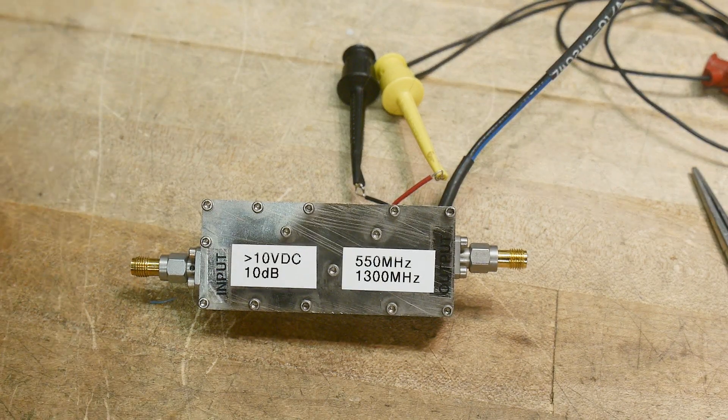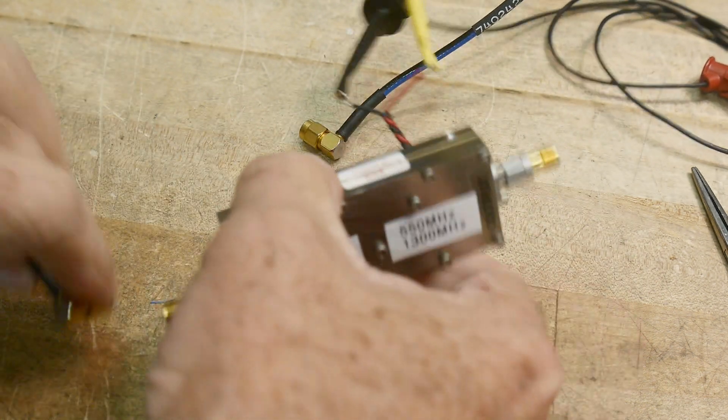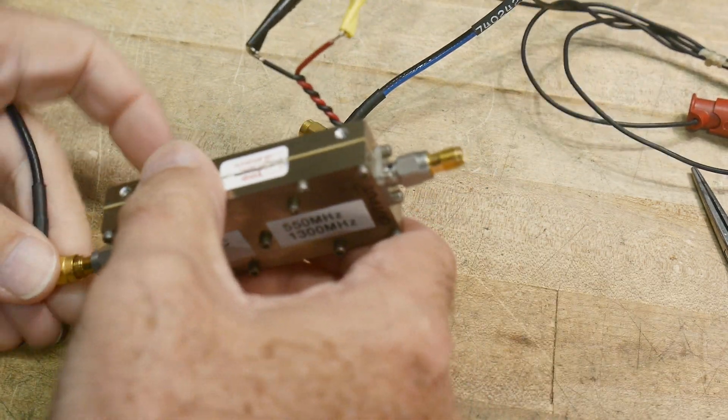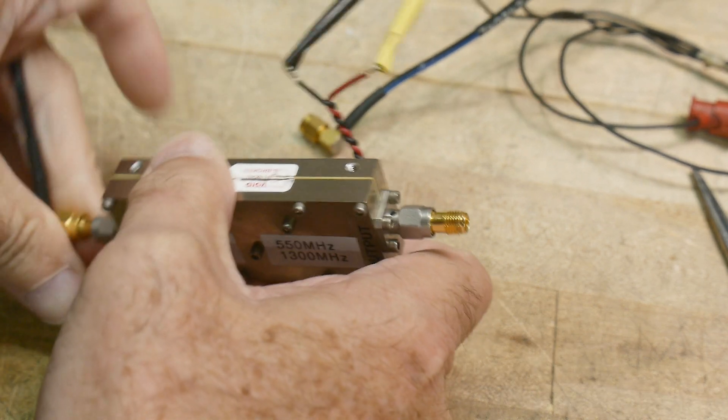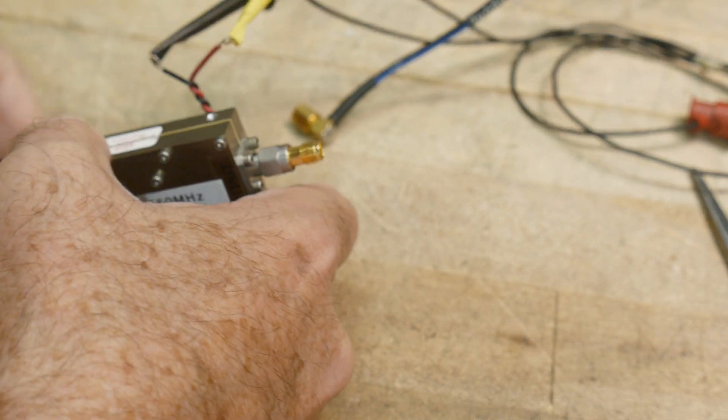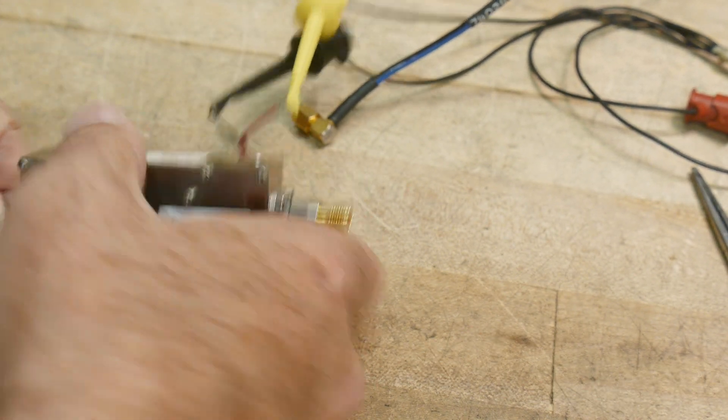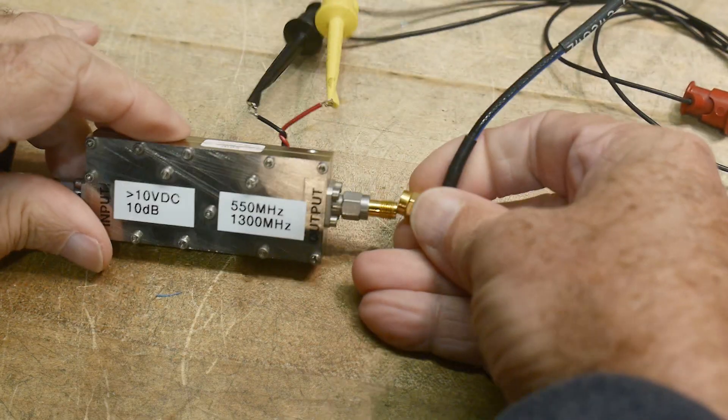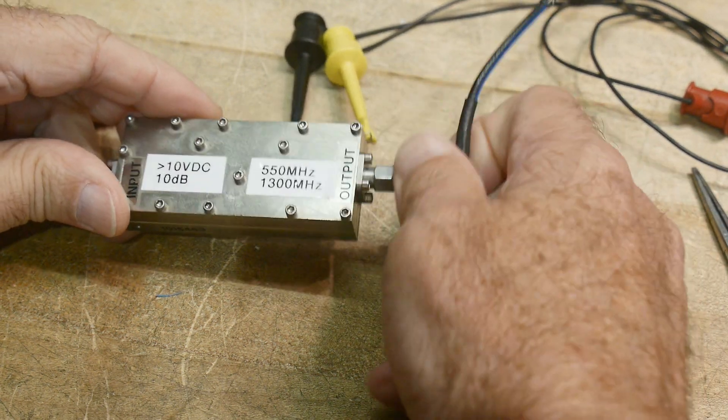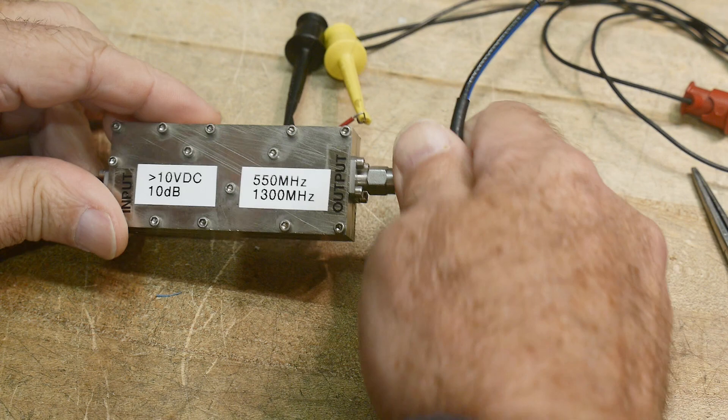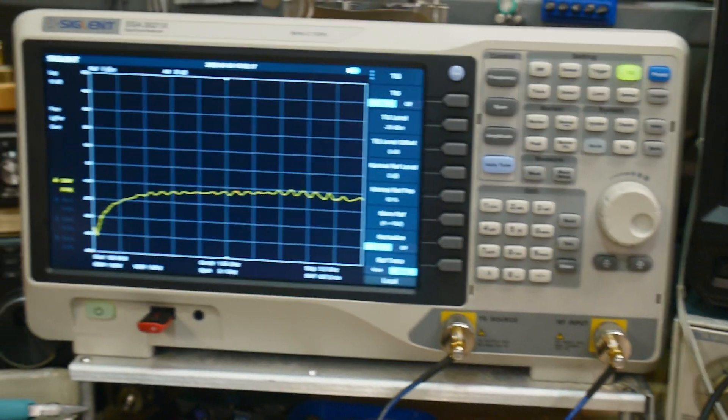We are going to connect the tracking generator to the input of the amplifier. And the input of the spectrum analyzer we will put on the output here.